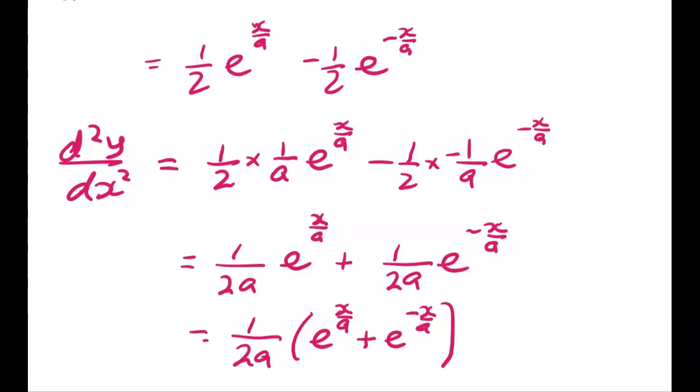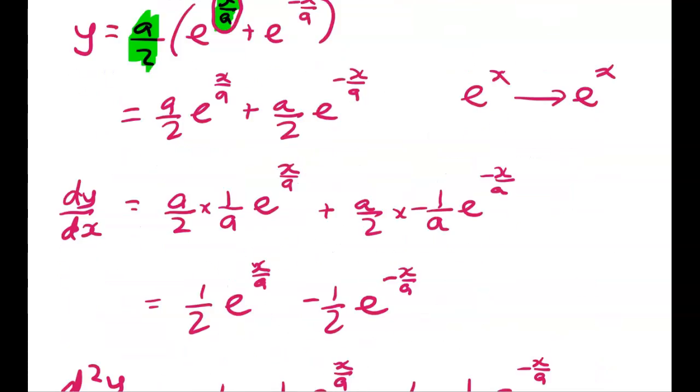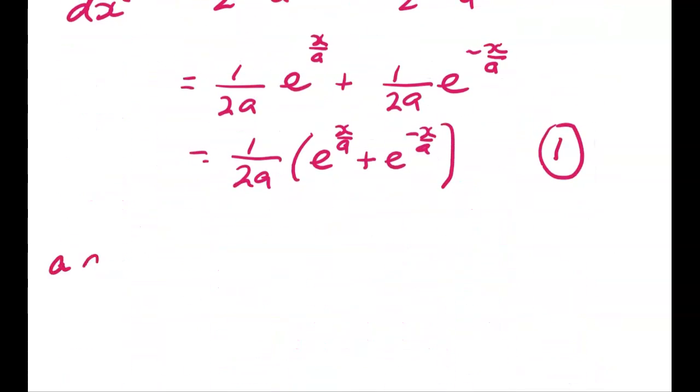So let's just park that for now. I might call that equation 1. And now we're going to go back to the question, and we're going to slowly build our way up on the left-hand side, and on the right-hand side. So let's start with the left-hand side. What's a times the second derivative?